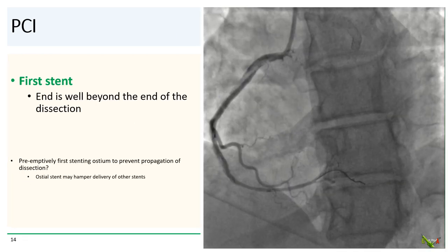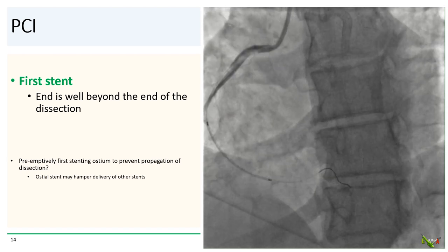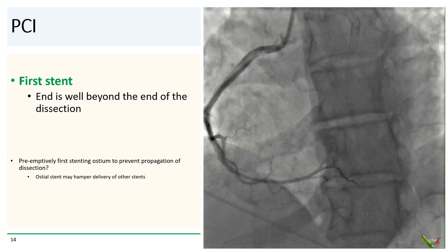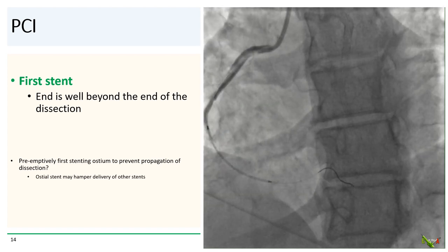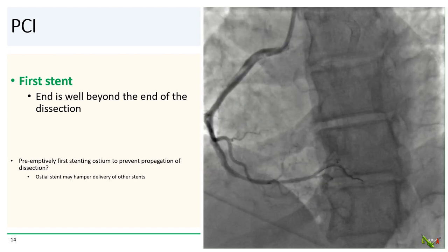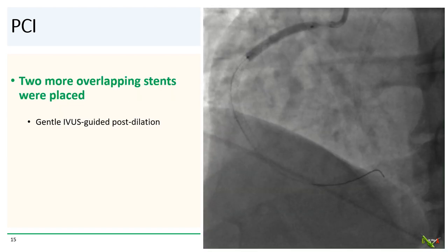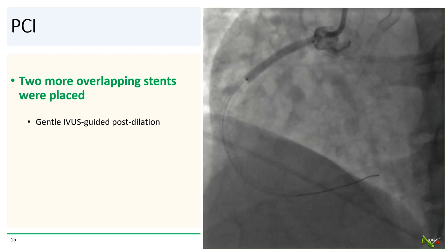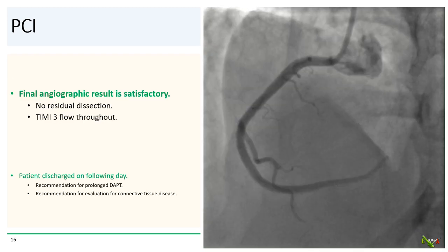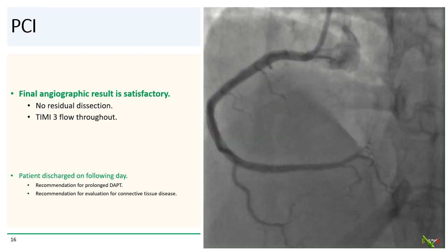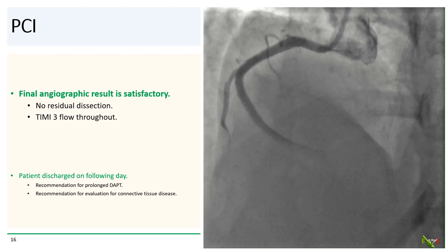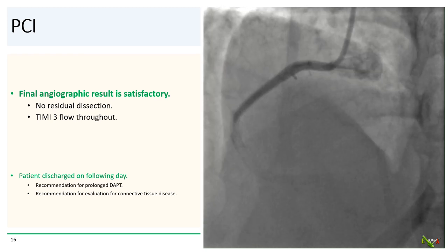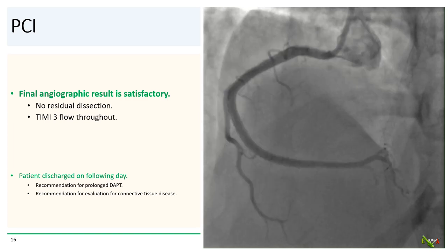Here we are placing our first stent, making sure it's ending in healthy tissue well beyond the end of the dissection. Preemptively stenting the ostium first to prevent back propagation was considered, but in this case hanging an ostial stent out in the aorta may hamper delivery of subsequent stents, so we opted not to do that. Two other stents went in to completely tack up the dissection, followed by gentle IVUS-guided post-dilation. Here's the final angiographic result, which is quite nice — no residual dissection with TIMI-3 flow throughout. The patient went home the next day with prolonged dual antiplatelet therapy recommended, and given her past history of LAD dissection, an evaluation for connective tissue disease was also recommended.